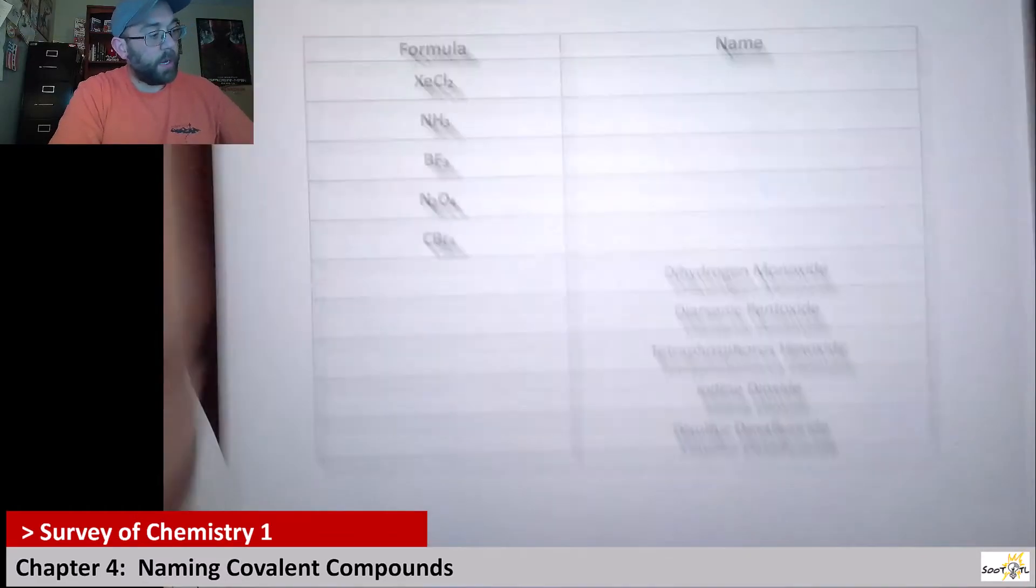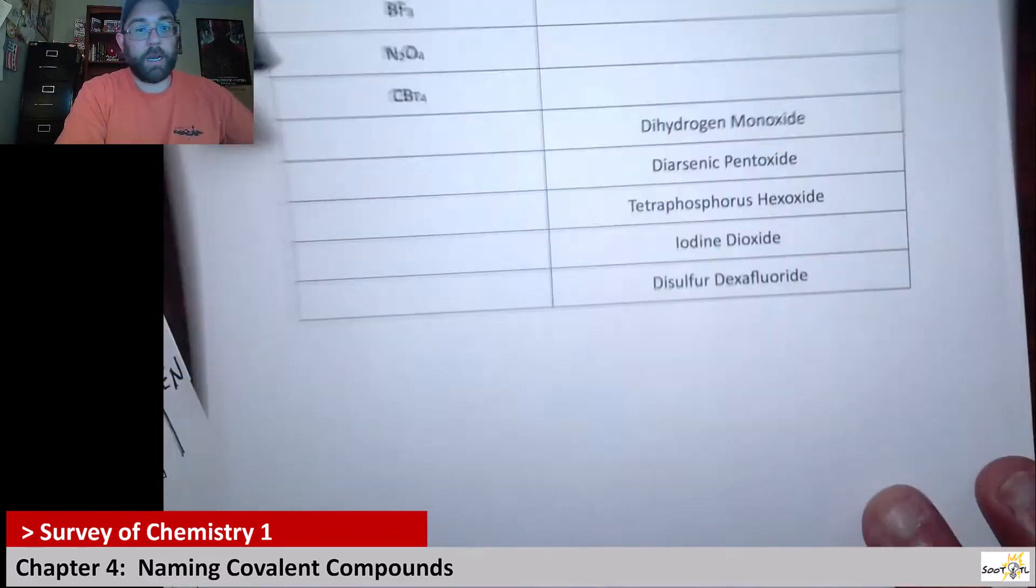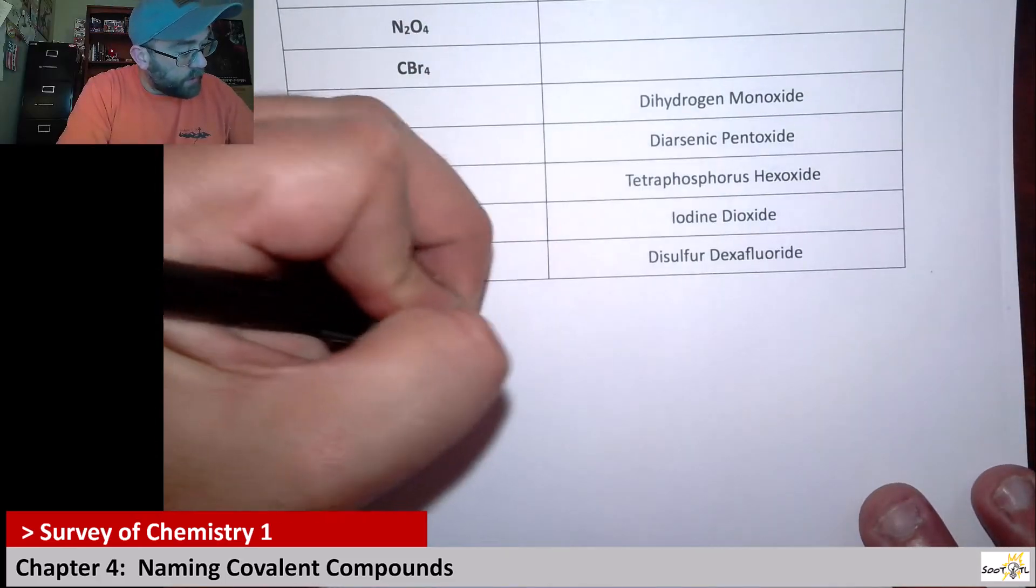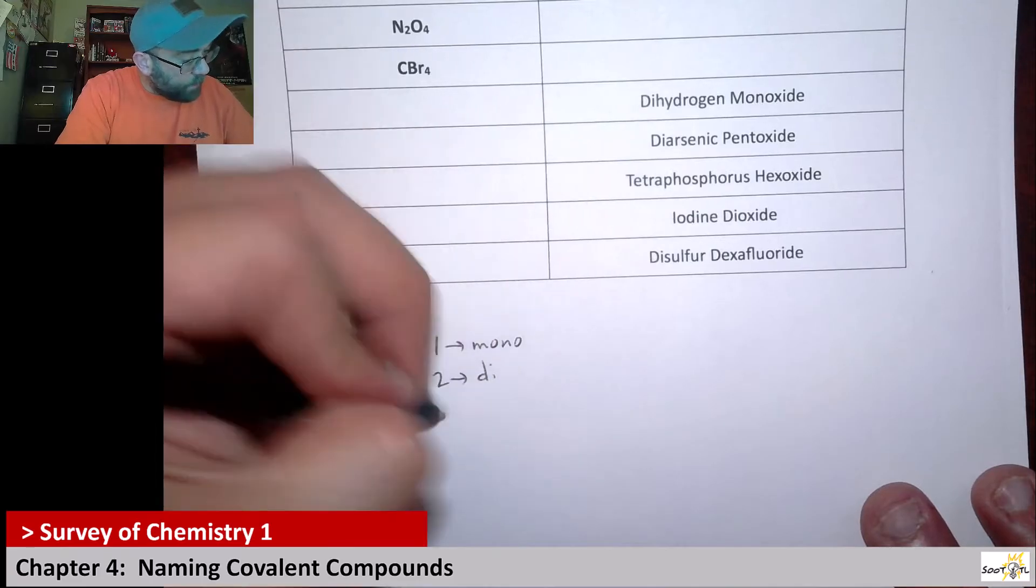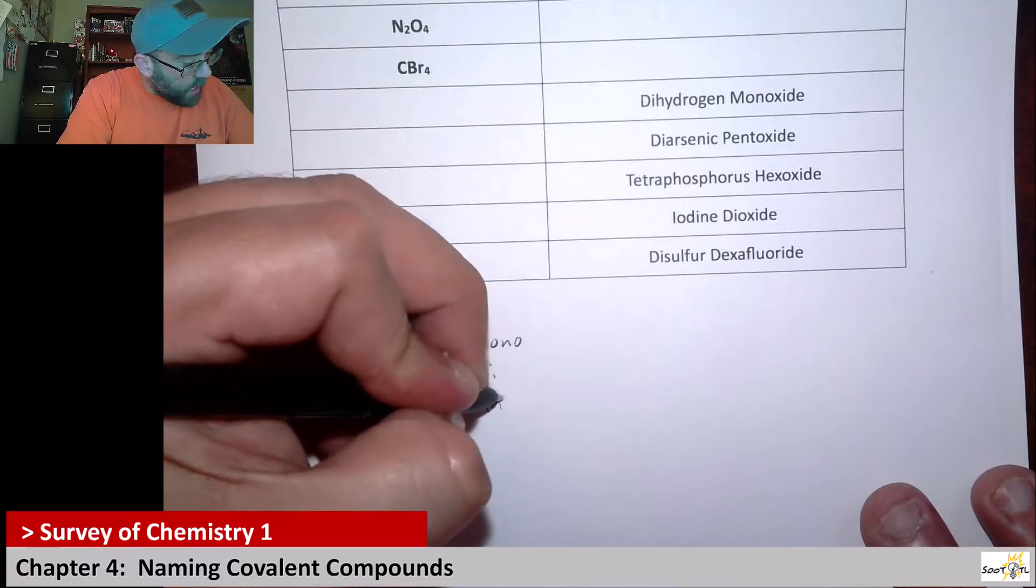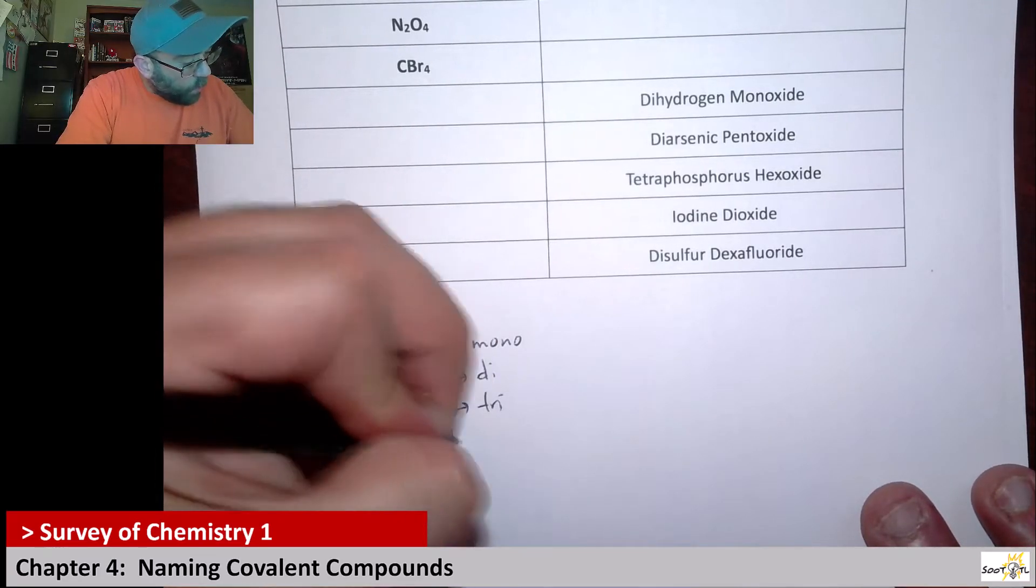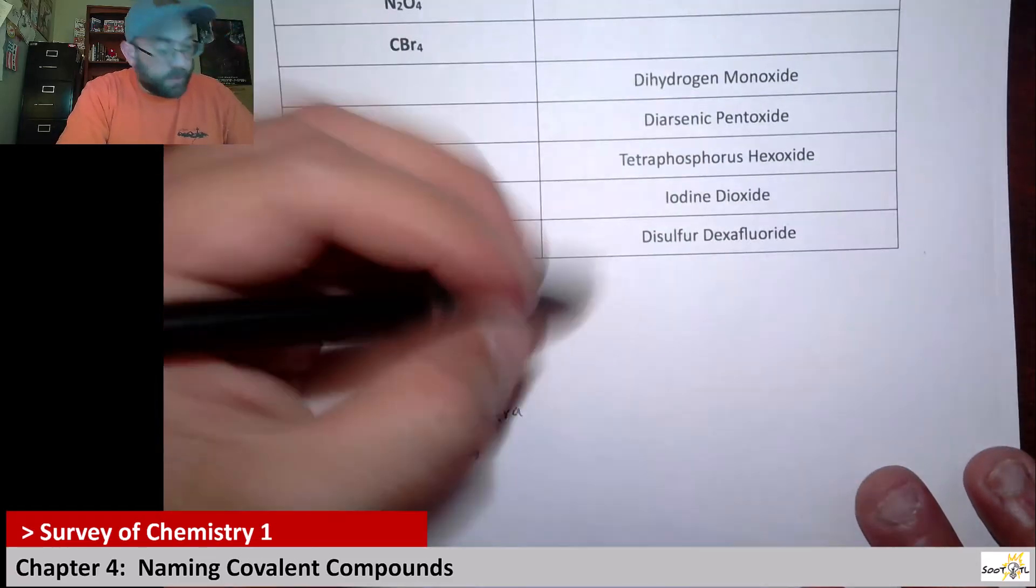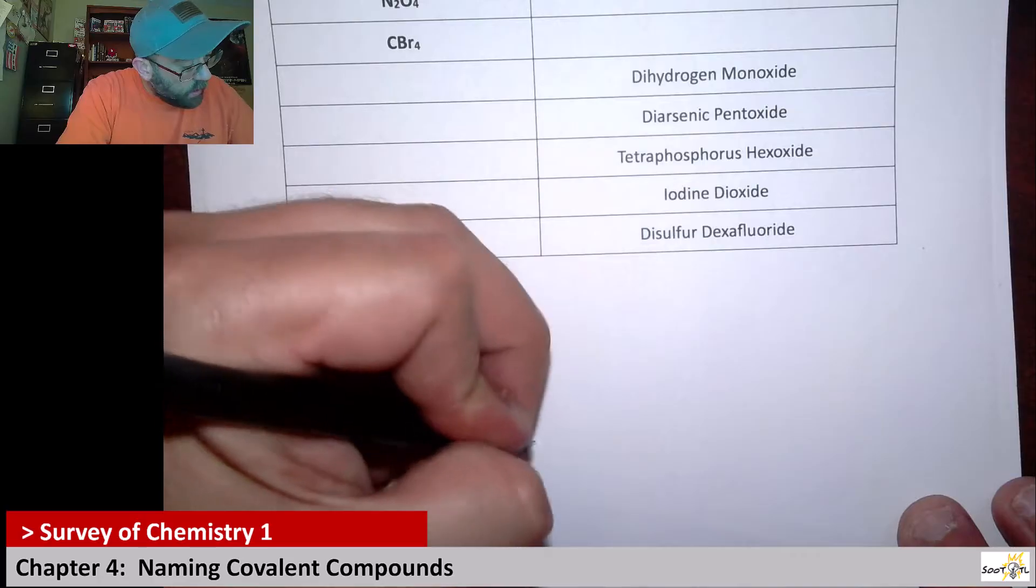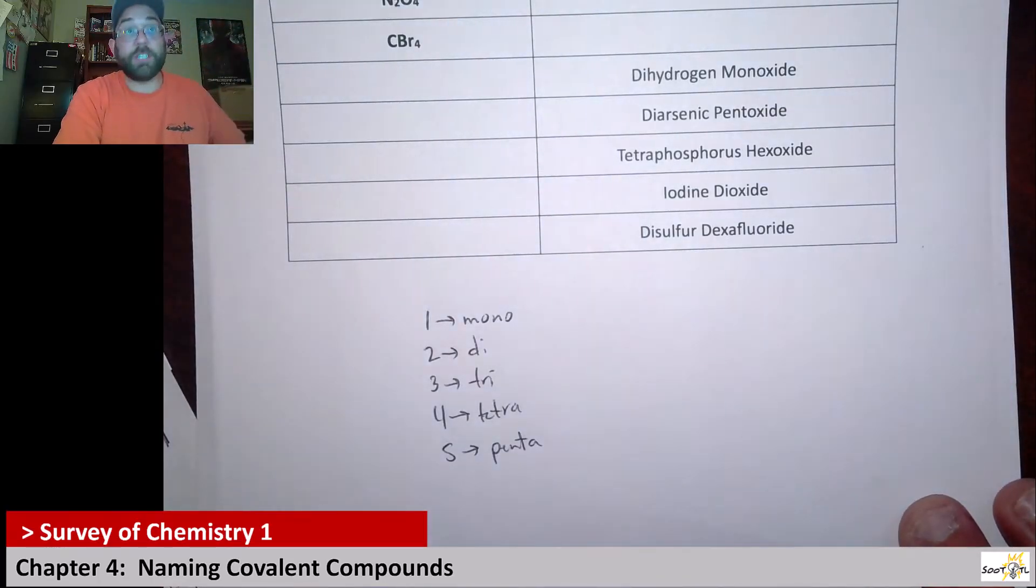But do recall like in stuff when we're looking at numbering, you've got one is mono right in a name, two is di, three is tri, four is tetra, and five is penta, and it keeps going hexa, hepta, it just keeps going up.